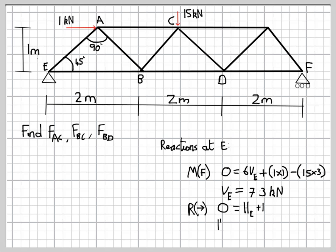Then we'll resolve forces horizontally, and that's very simple. We've just got one horizontal force acting at A, and so that gives us the horizontal reaction at E of minus 1 kN, so acting to the left.